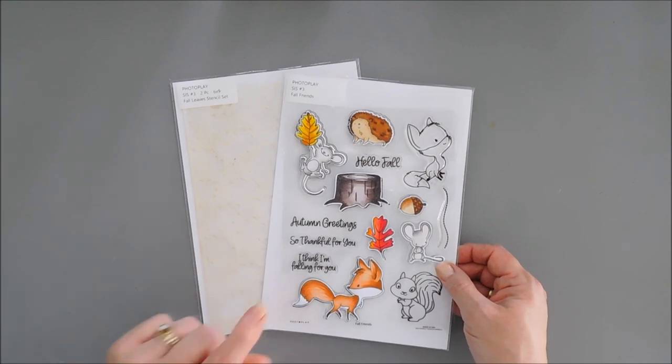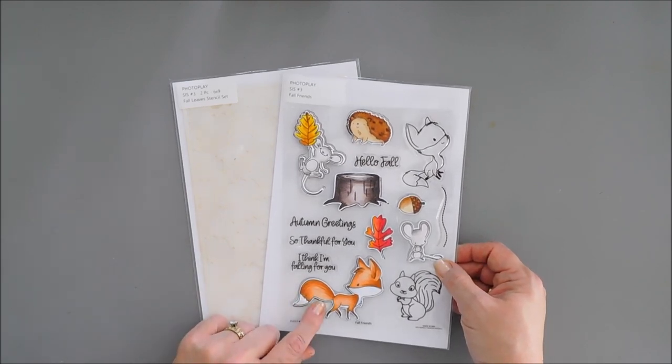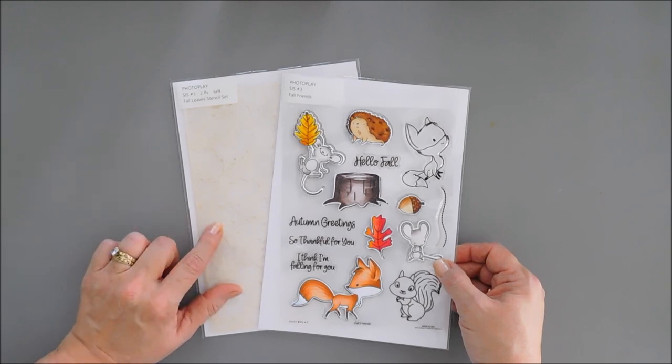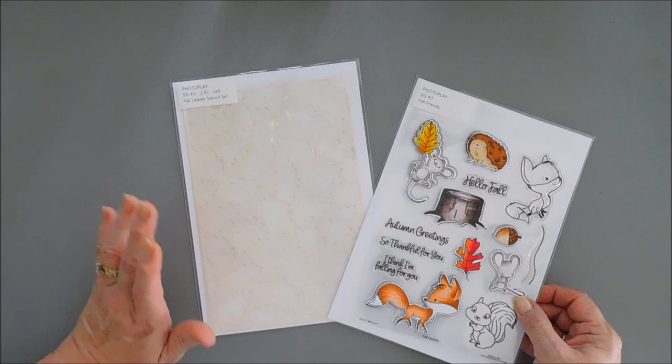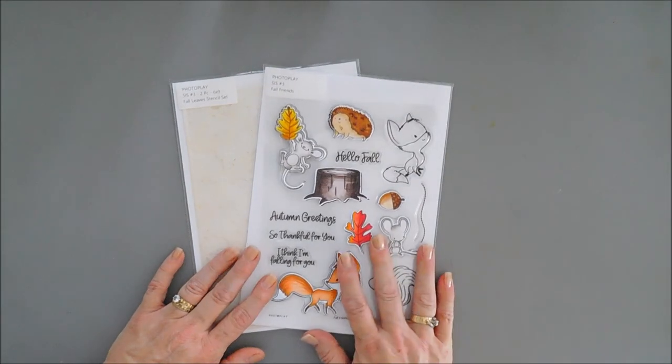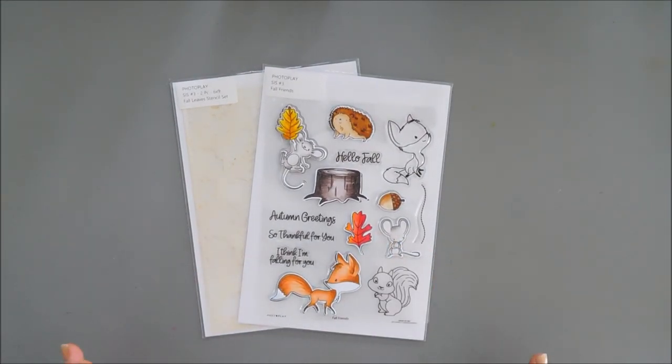But I want to pair this Say It With Stamps Hello Fall set with the Say It With Stamps Fall Leaves stencil set. I love stencil sets. This is just two pieces and it creates a great background for my card. So let's jump in and start by doing some stamping.